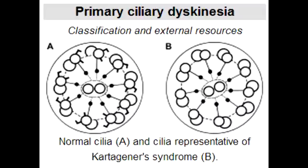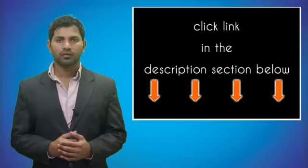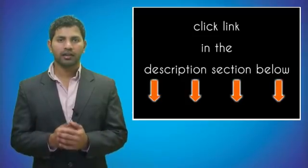What is situs inversus? Situs inversus is a congenital condition in which major visceral organs are reversed or mirrored from their normal position. What is bronchiectasis? Bronchiectasis is a disease state defined by localized irreversible dilation of part of the bronchial tree caused by destruction of the muscle and elastic tissue.